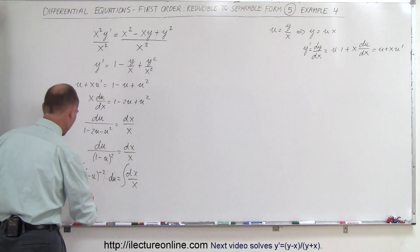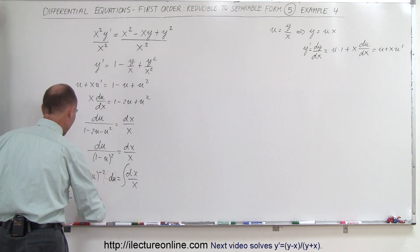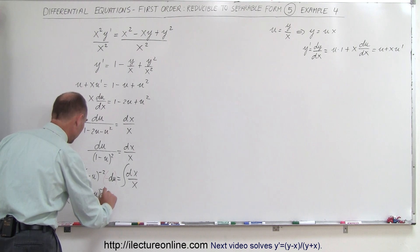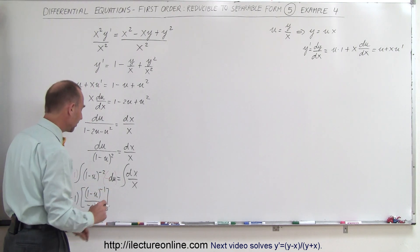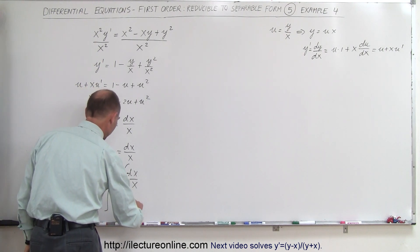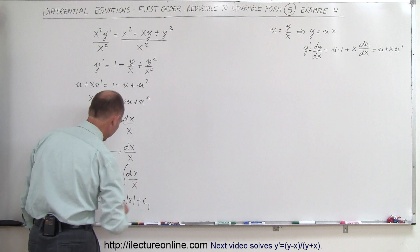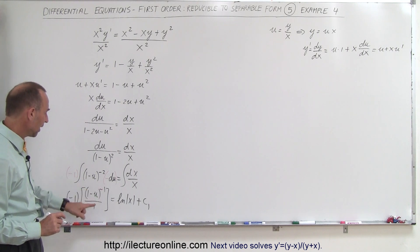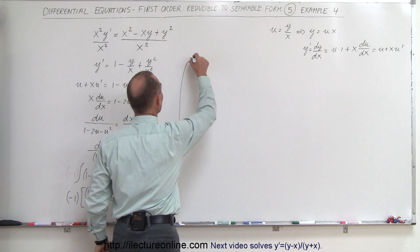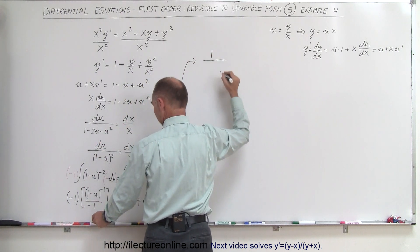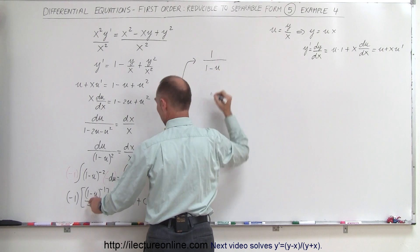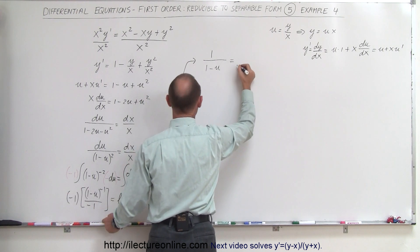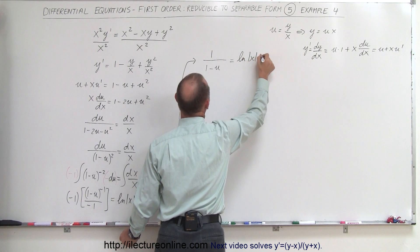When we integrate, this becomes minus one times (1 minus u) to the minus one power — we add one to the exponent and divide by the new exponent. On the right side we get the natural log of x plus a constant of integration, c1. The two minus ones cancel, and (1 minus u) to the minus one becomes 1 over (1 minus u). So the left side simplifies to 1 over (1 minus u), equal to the natural log of x plus c1.